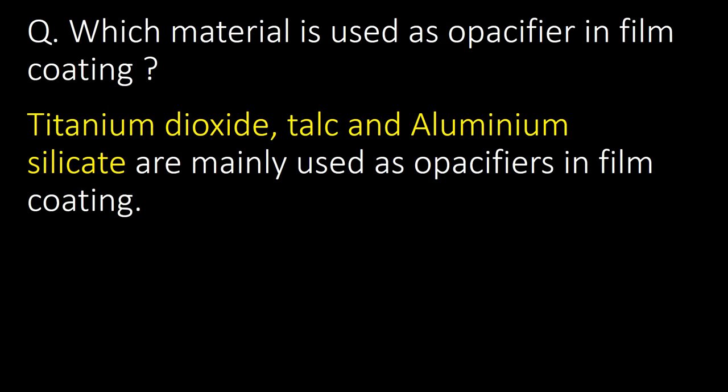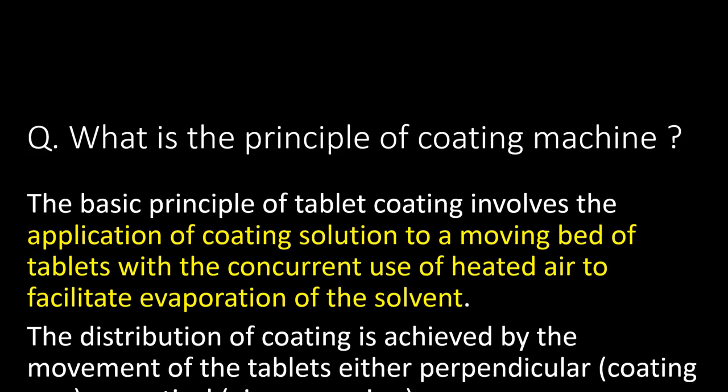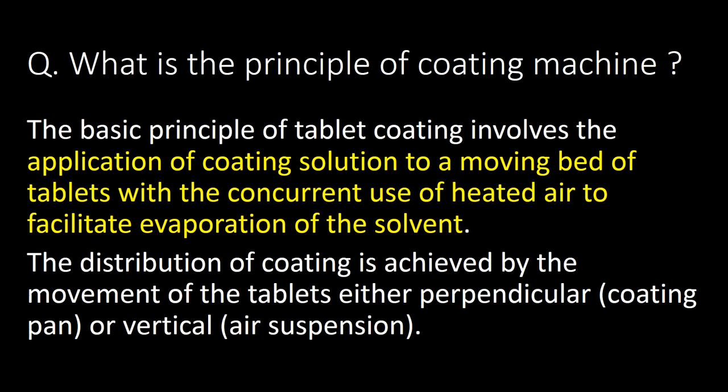Which material is used as an opacifier in film coating? Titanium dioxide, talc, and aluminum silicate are mainly used as opacifiers in film coating. This is a very important and frequently asked question: what is the principle of the coating machine?